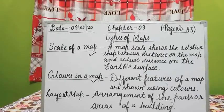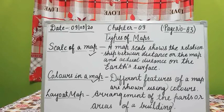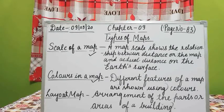These symbols show different landmarks like temples, mosques, churches, roads, rivers, capital city, and main city. A city is marked on a map by a small circle. See page number 85 where symbols on a map are given.